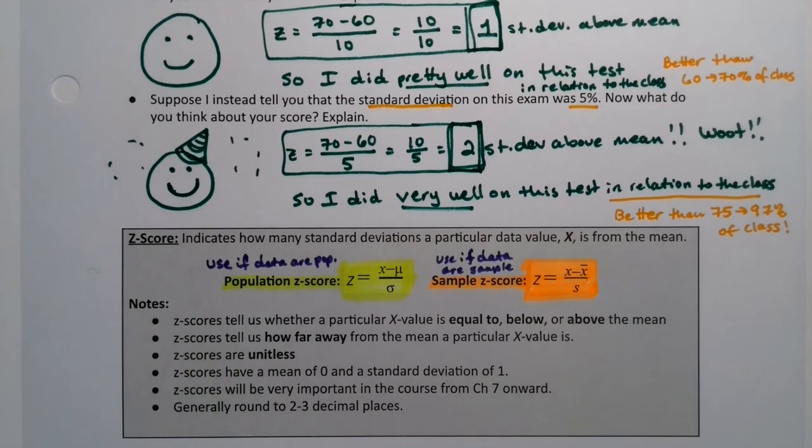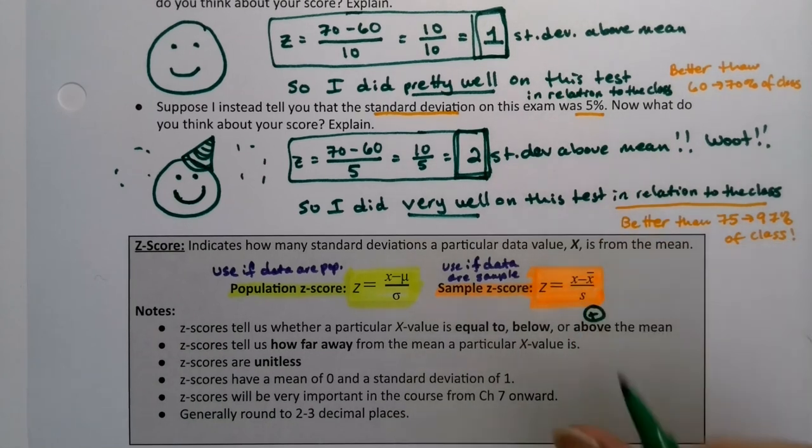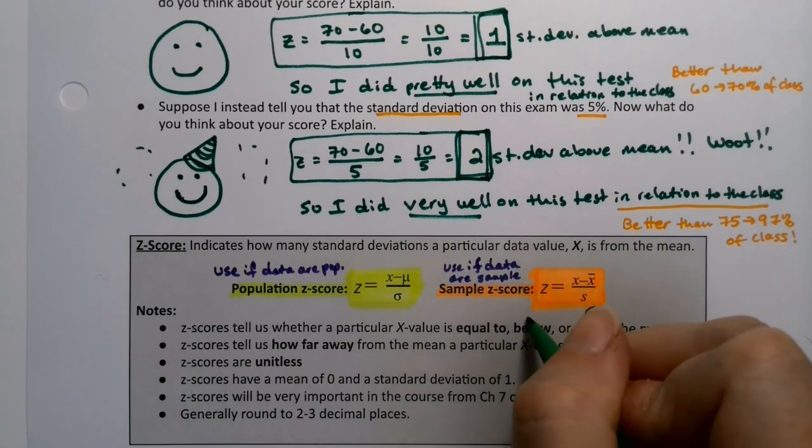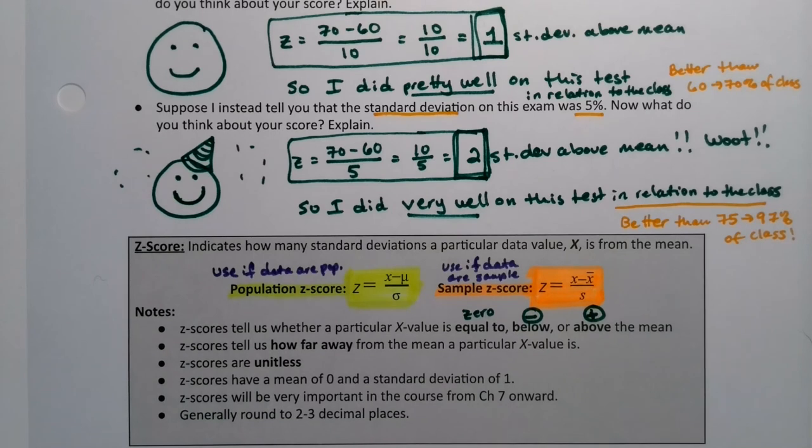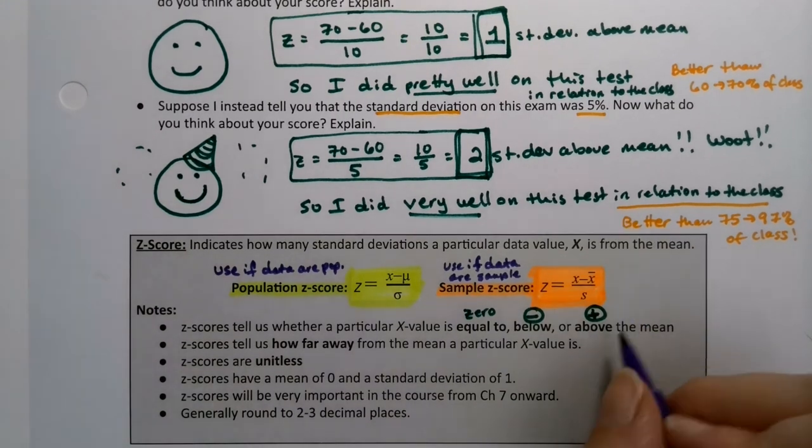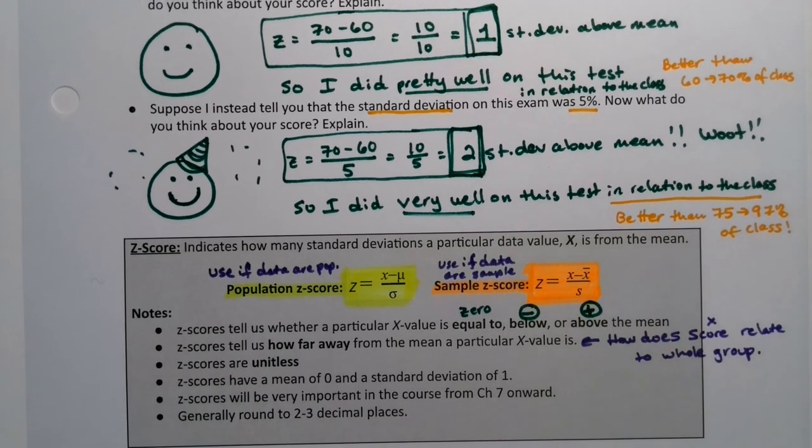All right. So a couple of things. Z-scores can tell you whether you score equal to above or below the mean. How? Well, they tell it to you by your sign. You scored above the mean. So both of these numbers are positive. If you score a positive Z-score, then you're above the mean. If you're a negative Z-score, you're below the mean. And if you're equal to the mean, zero, right? Your Z-score would be zero. And then the Z-score tells you how far away your mean is from your particular X value.